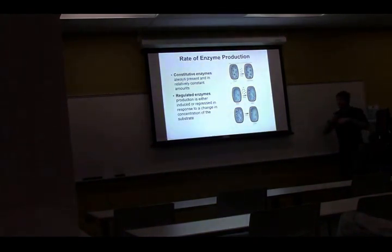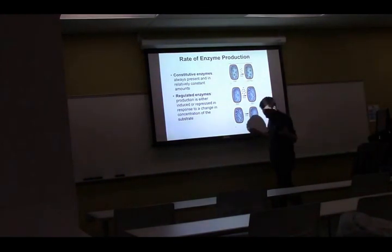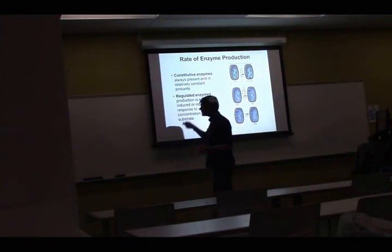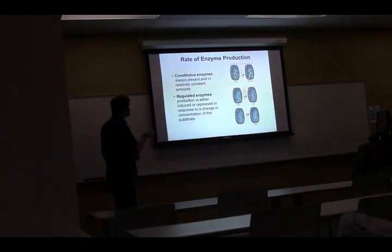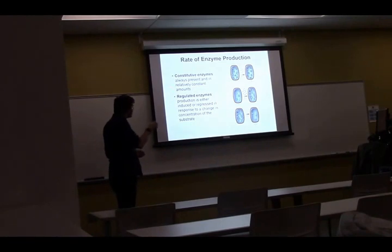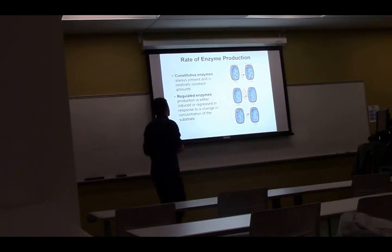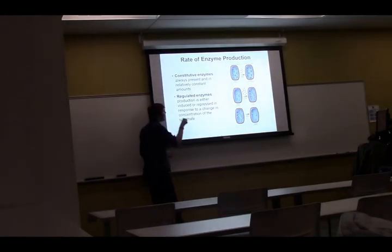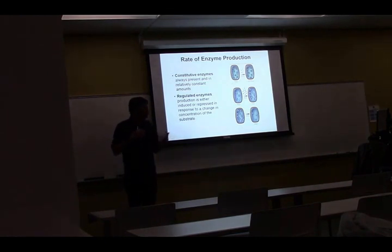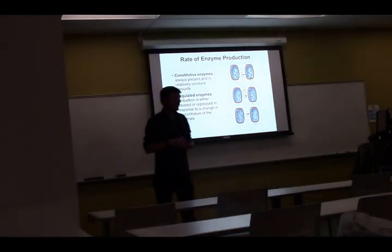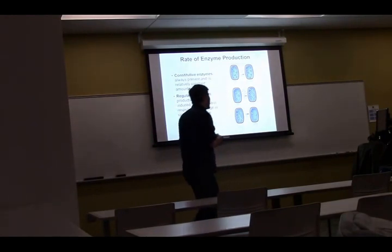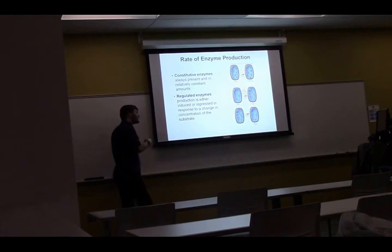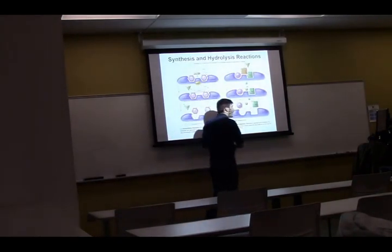Enzymes can always be on — these are constitutive enzymes, vital for cell life, so the cell always keeps them active. Or they can be turned on or off depending on the cell's needs — these are regulated enzymes. Regulated enzymes are potentially dangerous; if they don't have a substrate to work on, they may cause problems, so the cell turns them off.